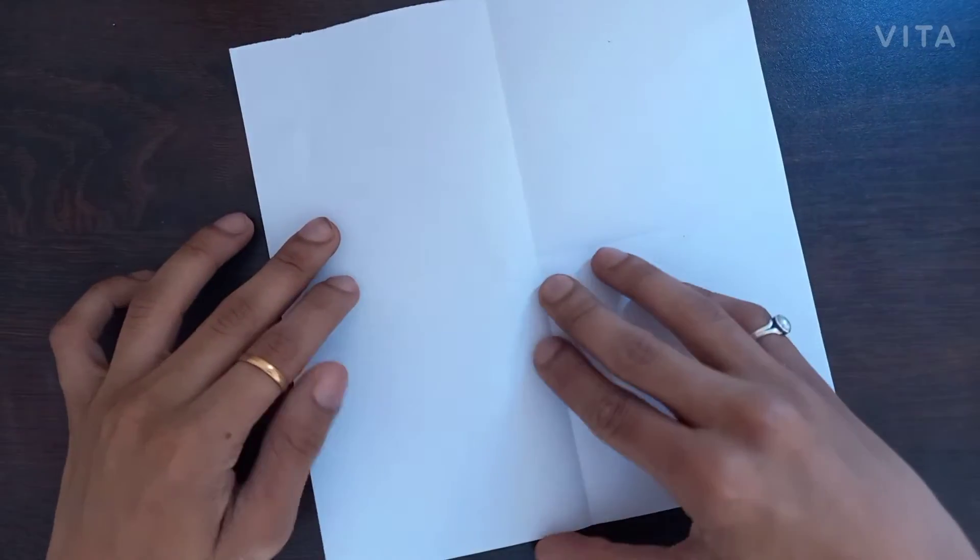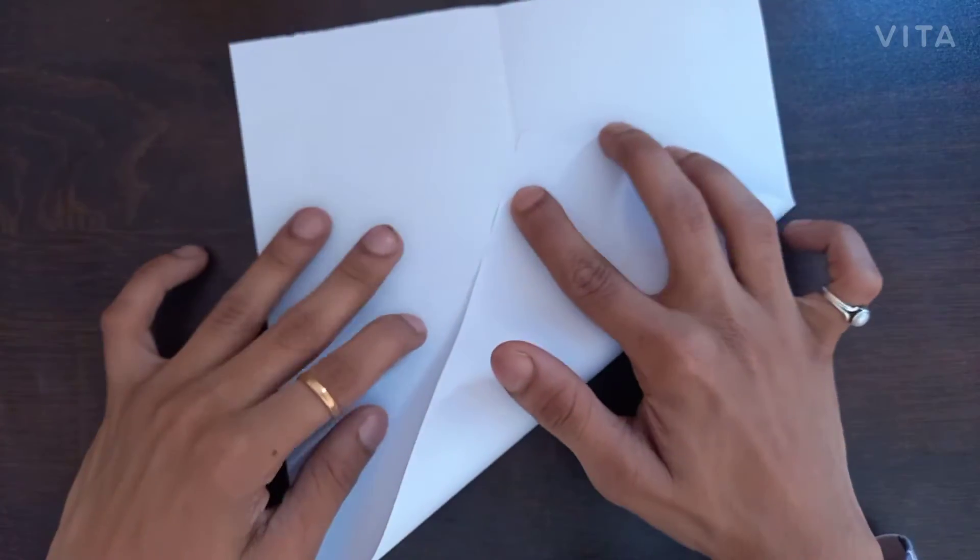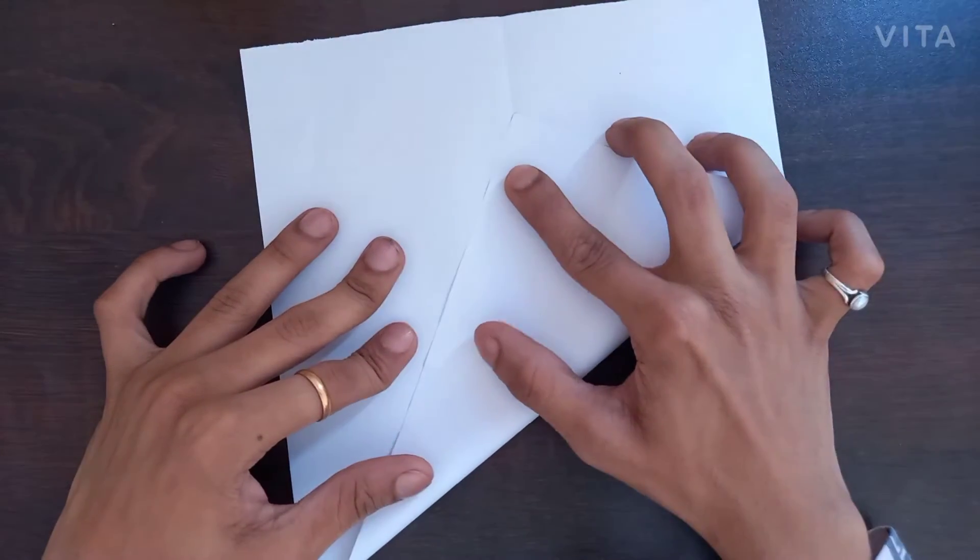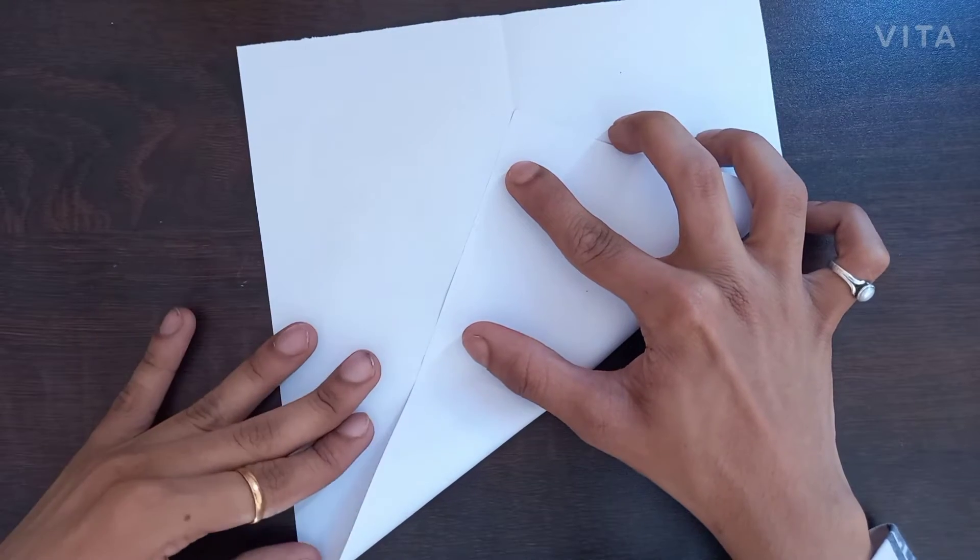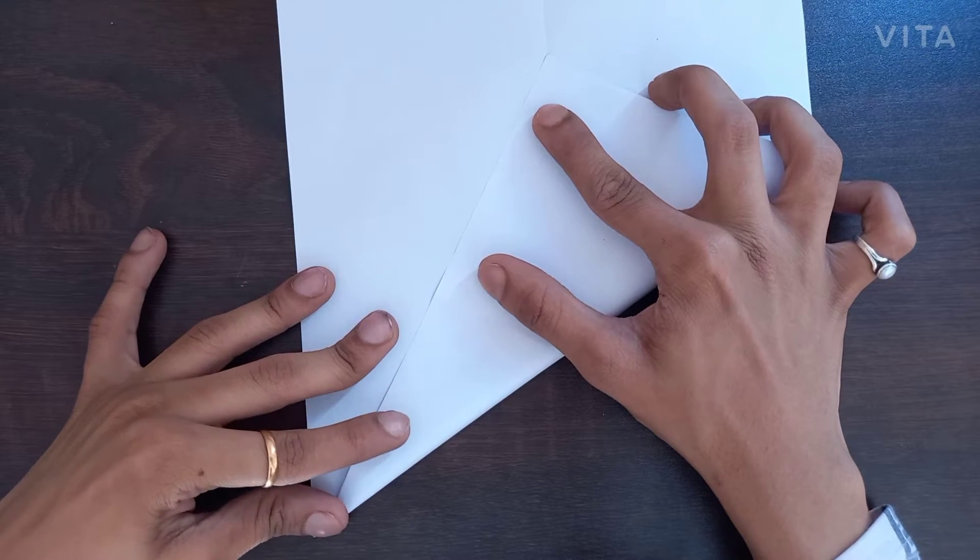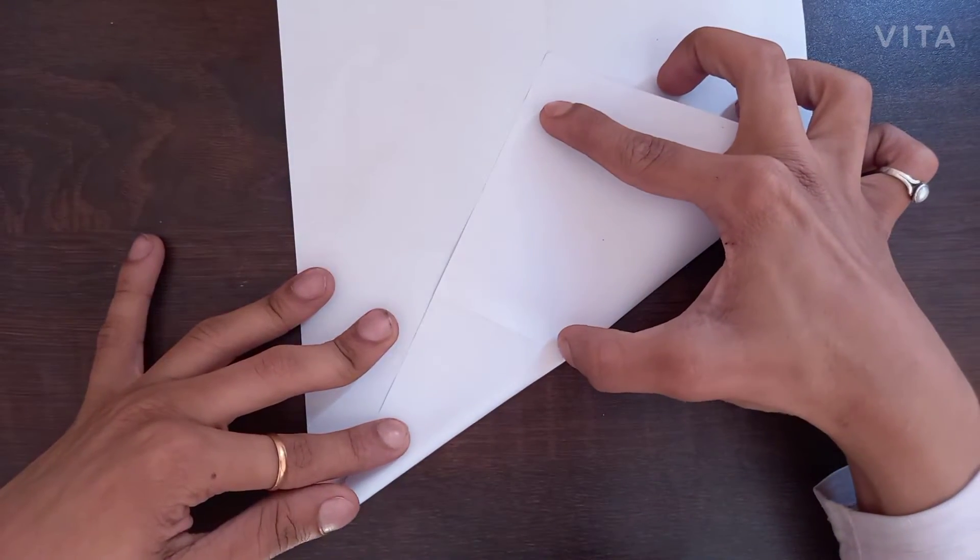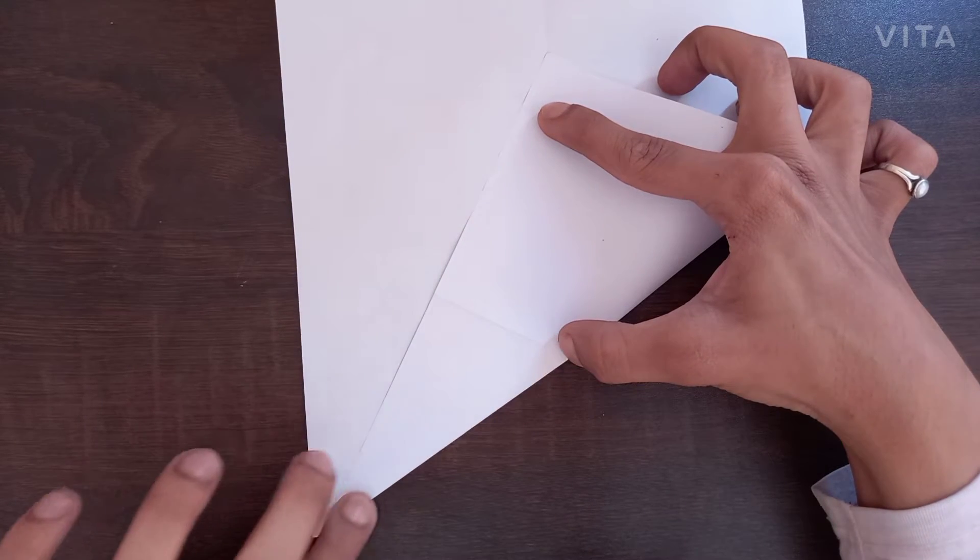For a better crease. Now what you have to do is take this point and match it with the middle point, just like this. And make sure the other edge is pointed as possible. And you have to fold it till this point only.